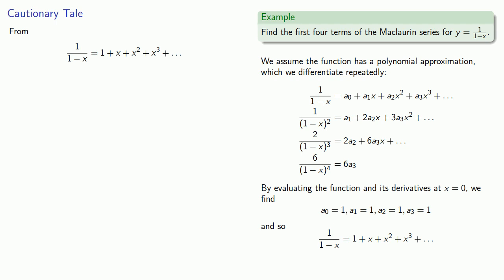So on the left hand side I have a perfectly nice respectable function, over on the right hand side I have a Maclaurin series, so I would like the Maclaurin series and the function to have the same values.